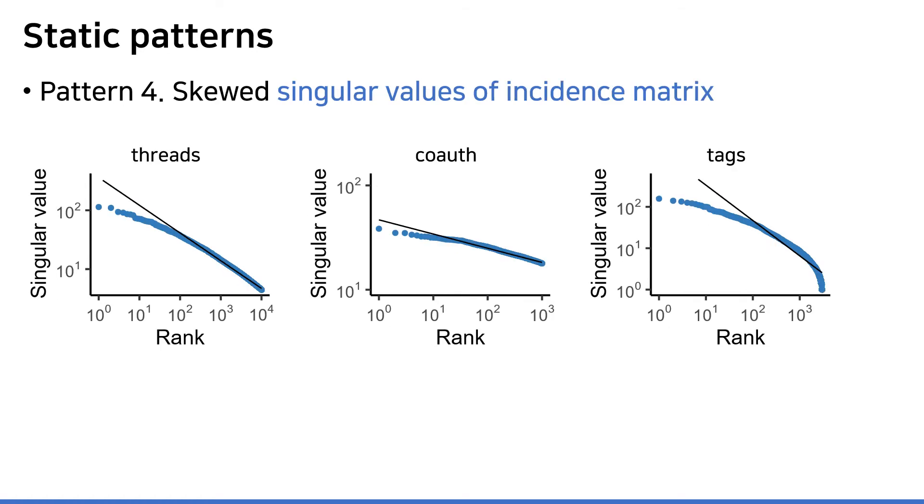The last structural pattern we examine is how the singular values of the incidence matrix are distributed. According to our examination, it generally follows a heavy-tail distribution. To be specific, the log-likelihood ratio test suggests that the log-normal distribution has the best fit to the dataset. And the log-normal distribution also falls under the class of heavy-tail distribution.